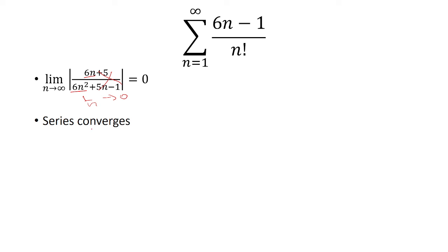Because this limit is less than 1, this series is going to converge by the ratio test.